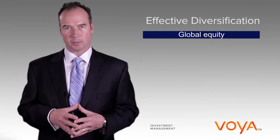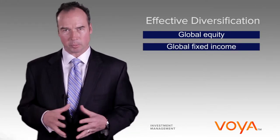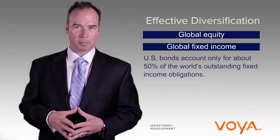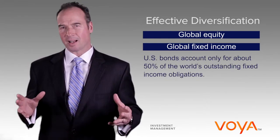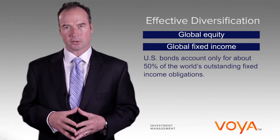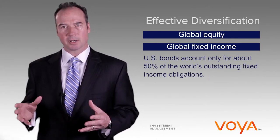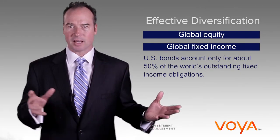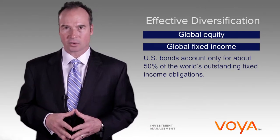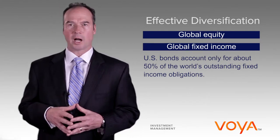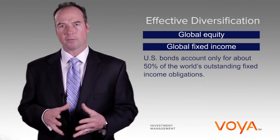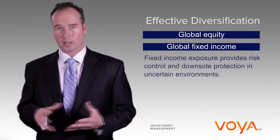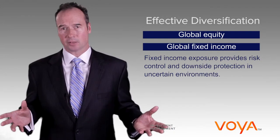Global fixed income diversification is equally important. Similar to U.S. equities, U.S. bonds account for only about 50% of the world's outstanding fixed income obligations. Many commentators are warning investors off bonds these days given the potential for rising interest rates. Those that do so, however, miss the point of fixed income exposure — namely risk control and downside protection in uncertain environments.